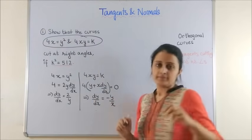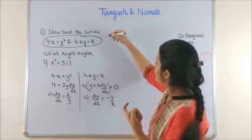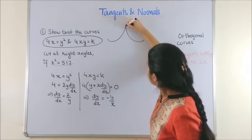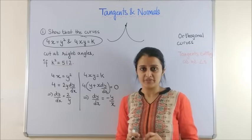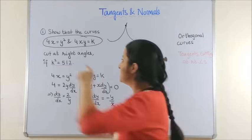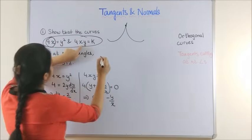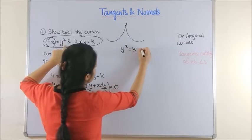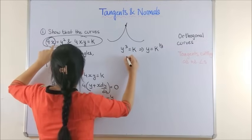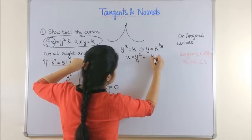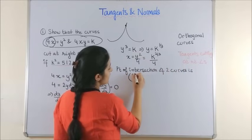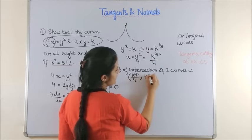If two curves are cutting at right angles, the point of contact is also the point of intersection of the two curves. So we solve these two equations simultaneously to get that point. For the first curve I can replace 4x with y², so this becomes y³ = k, which means y = k^(1/3). Substituting back we get x = y²/4 = k^(2/3)/4. So the point of intersection is (k^(2/3)/4, k^(1/3)).